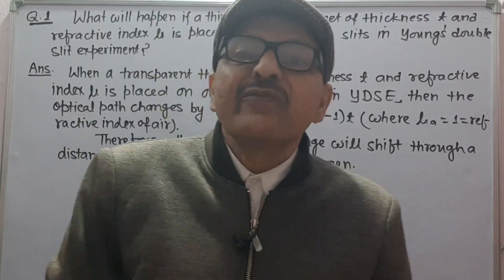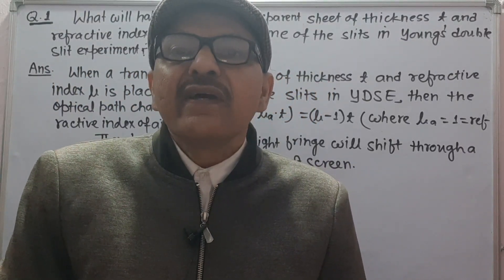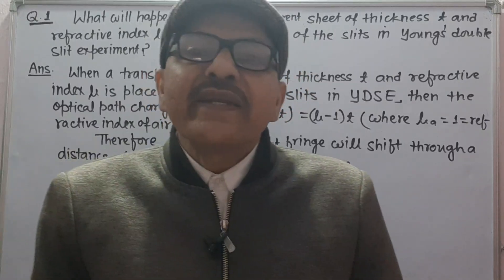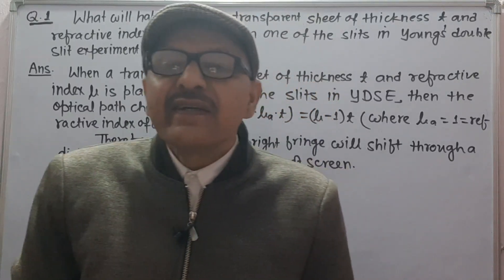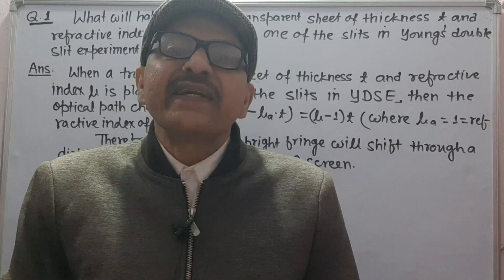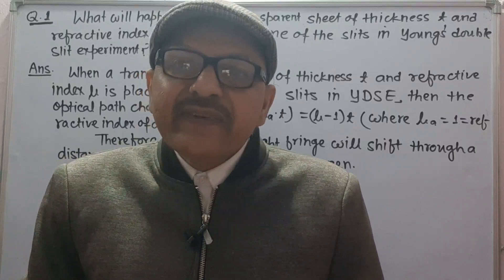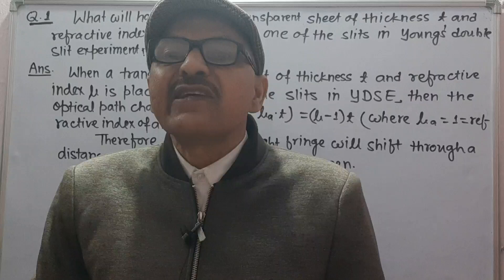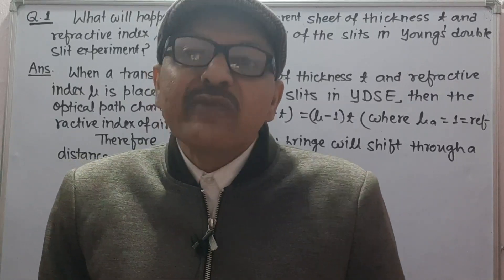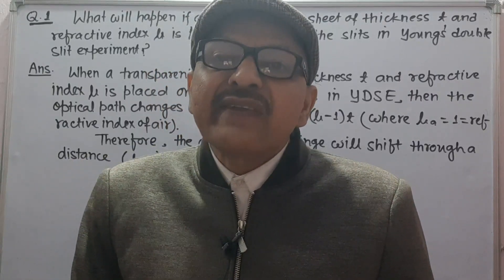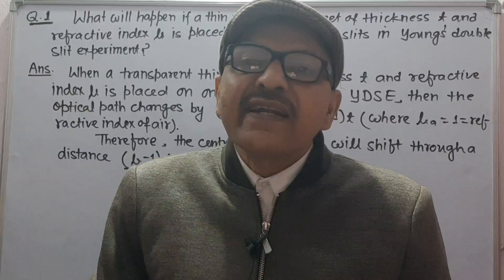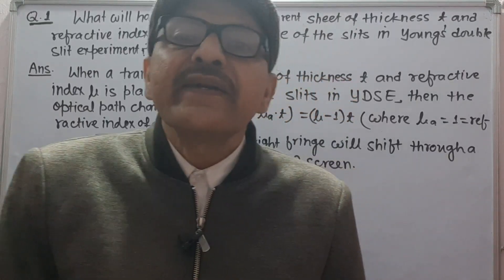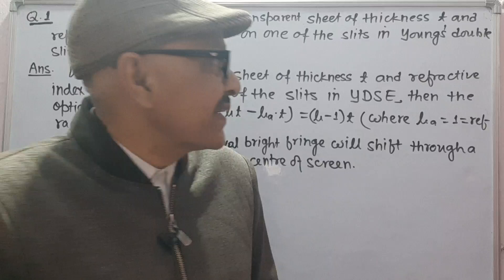Hello dear students, let us solve two important questions based on Young's double slit experiment. When a transparent sheet of thickness t and refractive index mu is placed on one of the slits in Young's double slit experiment, the optical path changes and therefore the central bright fringe shifts through a certain distance on the screen.